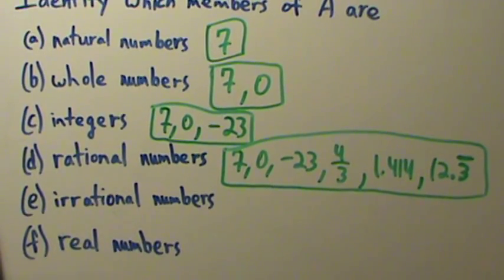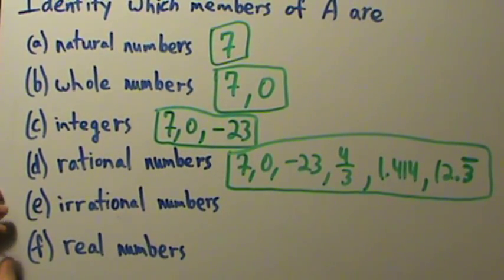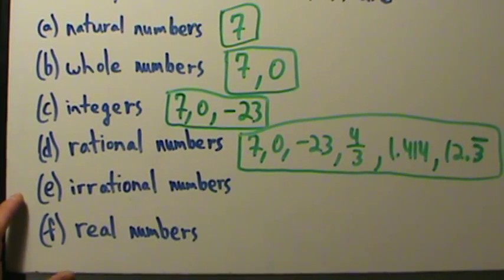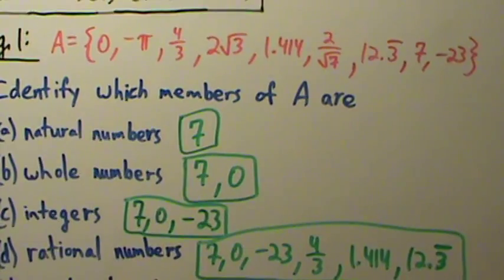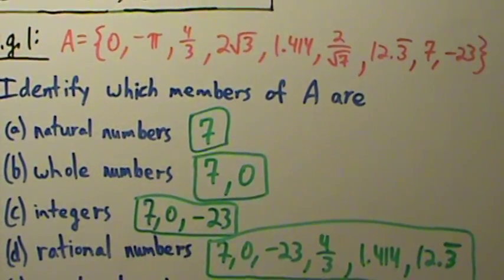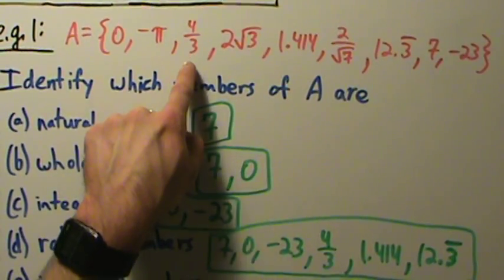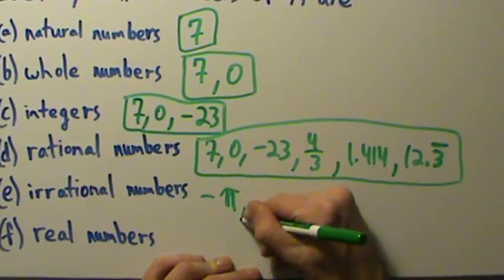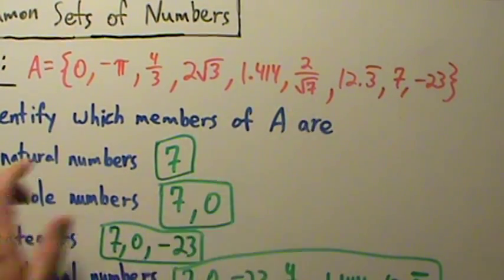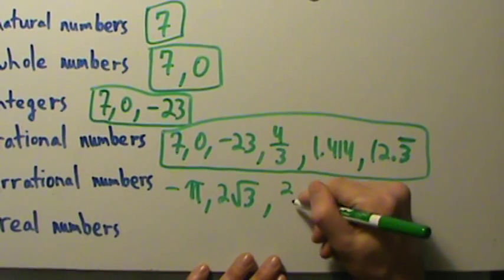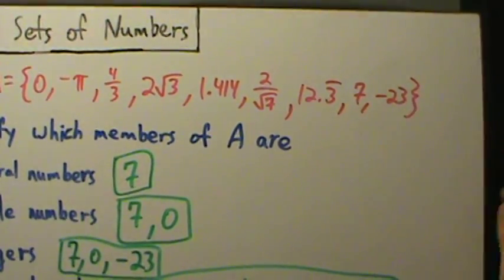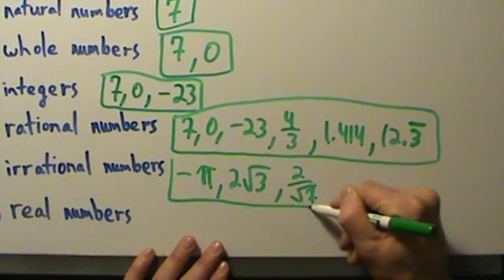How about the irrational numbers? That's pretty much everything in the set that we didn't list as rational. So irrational numbers are going to be: negative pi — irrational; two root three — irrational; and two divided by root seven — irrational. 1.414 is rational, four-thirds is rational, and the rest we already have. So these are the only three irrational numbers in set A.